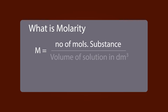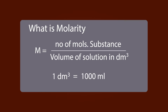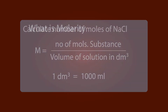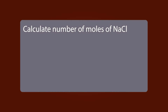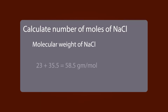...the number of moles of substances divided by the volume of solution in one dm³, and one dm³ is equal to 1000 ml. Now, how do we calculate the moles of NaCl? We will have the molar weight of NaCl as...